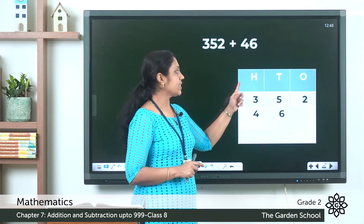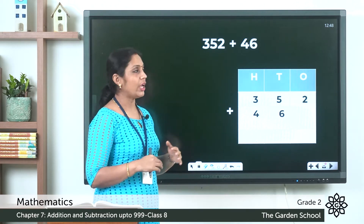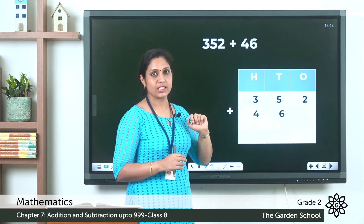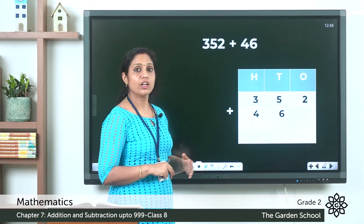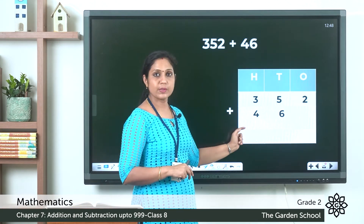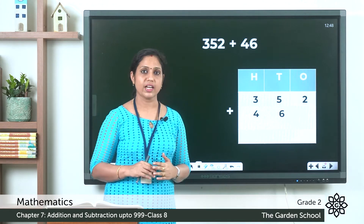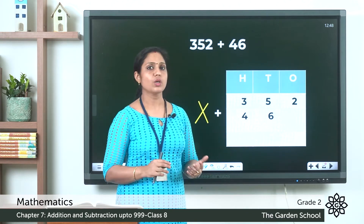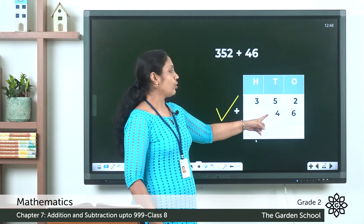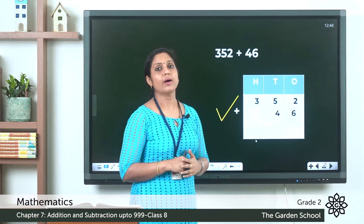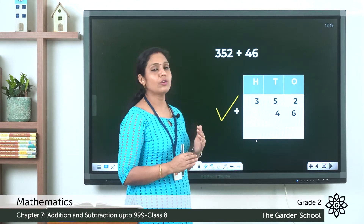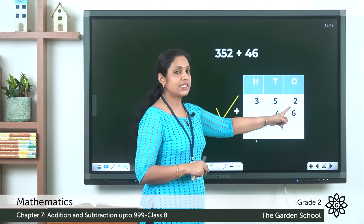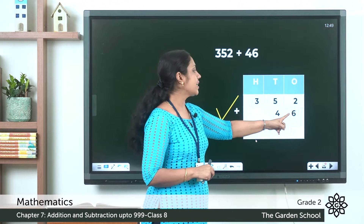Let's check more examples. We have 352 plus 46. So 352 is a three-digit number — we have ones, tens, and hundreds. The number 46 has ones and tens. If 4 is written in the hundreds place, that is incorrect. Because 46 has four tens and six ones, 4 should come under the tens place and 6 under the ones place. Only then will you get the correct answer.